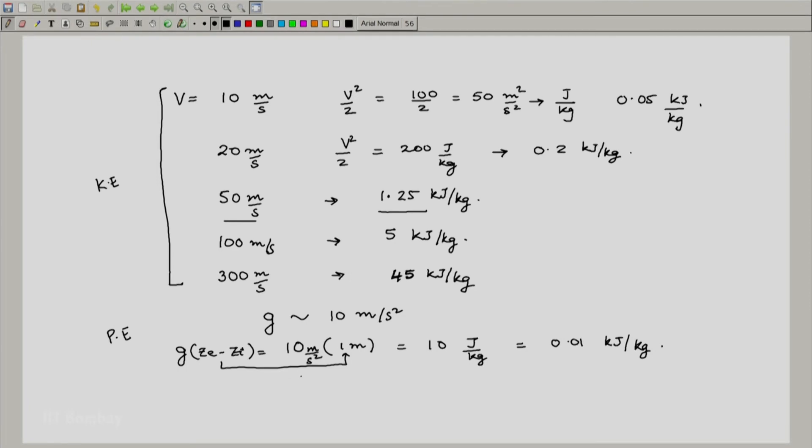One could have sometimes in some boilers around 10 meters, in which case this number would be 10, this would be 100, and this would be 0.1. Only very rarely in some boilers, where depending on how you take the inlet, you could probably go up to even 100 meters of difference, in which case this is 1000 and this is only 1 kilojoule per kg. By far, the difference in potential energy in such systems can be reasonably negligible.